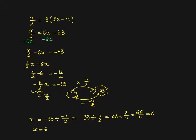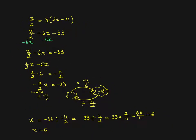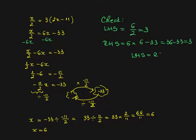Now if I go back and check in my equation. Left hand side is 6 over 2 which is 3. Right hand side is 6 times 6 minus 33. 36 minus 33 is the same, 3. So left hand side equals right hand side. My solution is correct.